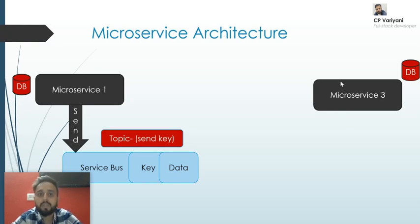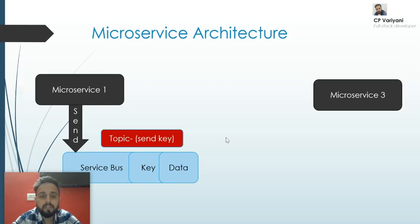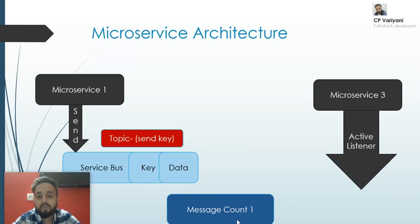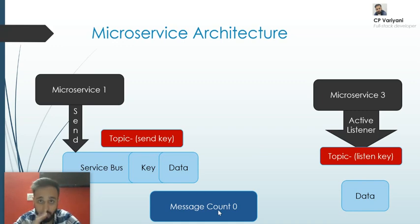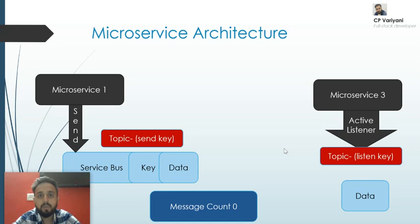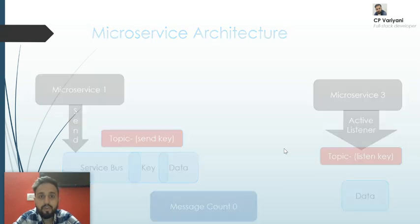Microservice one uses the Service Bus, attaches its data to a queue using a send key, and sends the message via a topic to microservice three. The moment it loads the data, the message count on the server automatically increases by one. Microservice three, as the active listener, detects that the message count is one, picks up the data using the listen key, and receives it. Once received, the message count drops back to zero. In the live demo we'll use debuggers to pause execution so we can actually see this happening.